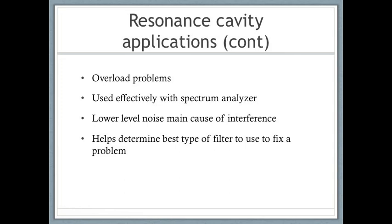Receiver front-end selectivity can be greatly enhanced by additional filtering, eliminating many desensitization, IM, and overloading problems. When used in combination with a spectrum analyzer — a device used to plot input signal versus frequency — cavity filters can allow detailed analysis of lower-level transmitter noise, which is one of the major sources of interference at multi-transmitter sites. Cavity filters can also stand alone as test equipment for analyzing receiver IM problems and help determine the best type of filter to use for a permanent fix.